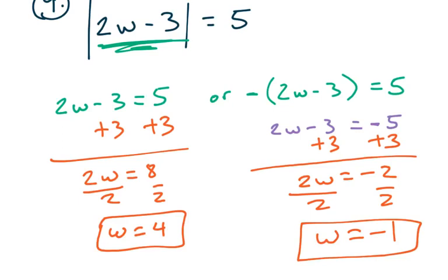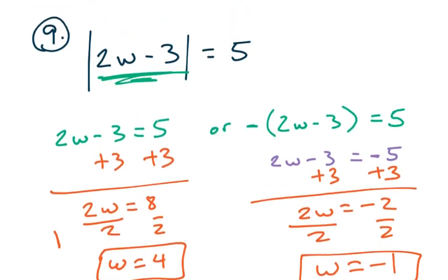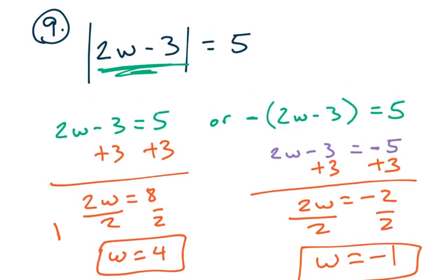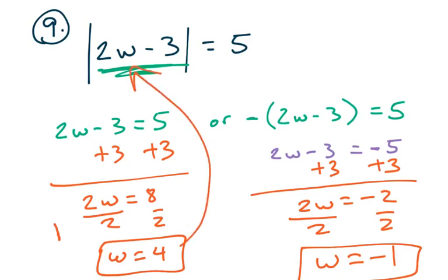If you have any hesitancy, I encourage you to substitute your values back in. If I plug in 4: two times 4 is 8, minus 3 is 5, and the absolute value of 5 is 5. And if I plug in negative 1: negative 2 minus 3 is negative 5, and the absolute value of negative 5 is 5. So we're good.